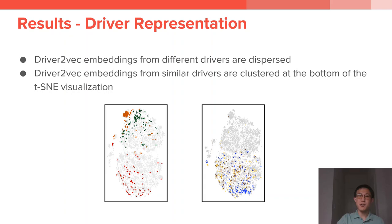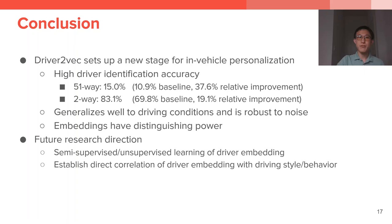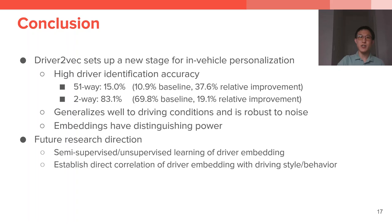In conclusion, the Driver2Vec model sets up a new stage for in-vehicle personalization. This is achieved first by having high driver identification accuracy. Our performance is much higher than baseline, generalizes well to different driving conditions, and is robust to noise. The embeddings we generate have distinguishing power and could potentially represent driving styles. For future work, we want to focus on semi-supervised and unsupervised learning of driver embeddings, and establish direct correlation of driver embeddings with driving style and specific driving behaviors.